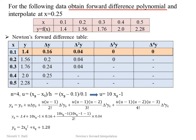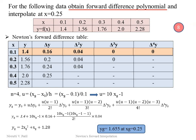To interpolate at xg = 0.25, substituting into the polynomial gives yg = 1.655. For the 8-mark exam question, the mark distribution is: 3 marks for the difference table, 1 mark for calculating u, 3 marks for obtaining the polynomial, and 1 mark for the final interpolated value.